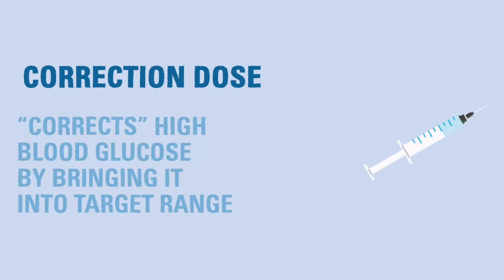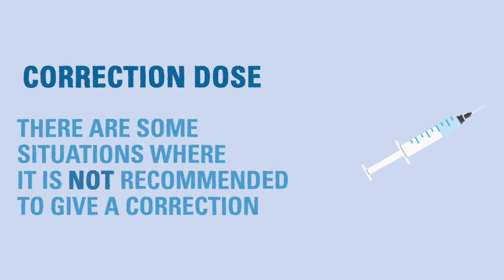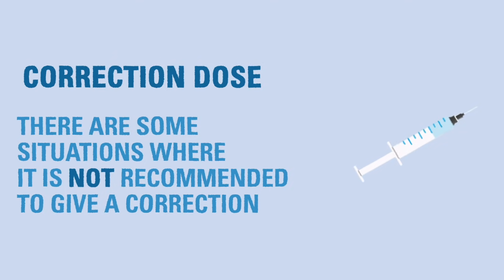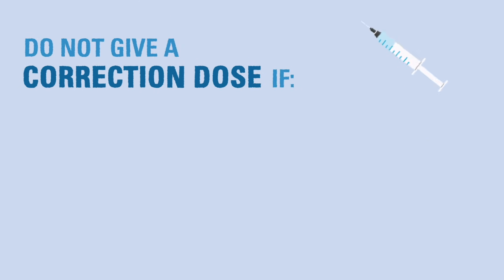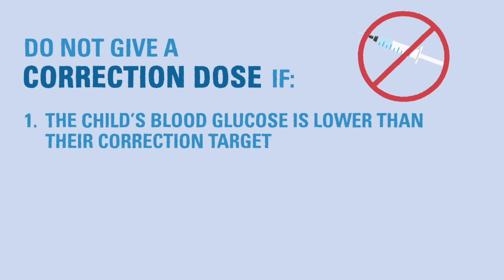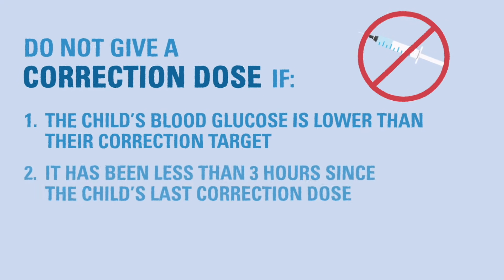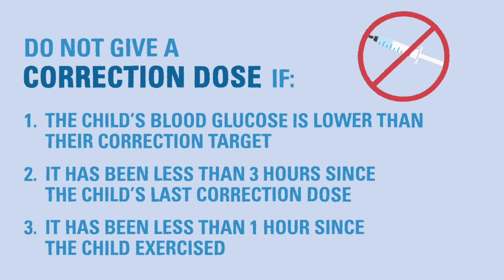There are some situations where it is not appropriate to give a correction dose of insulin. You should not give a correction dose if: the child's current blood glucose is lower than their correction target, it has been less than three hours since the child's last correction dose, or it has been less than one hour since the child participated in vigorous exercise.